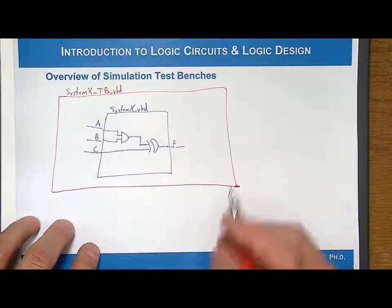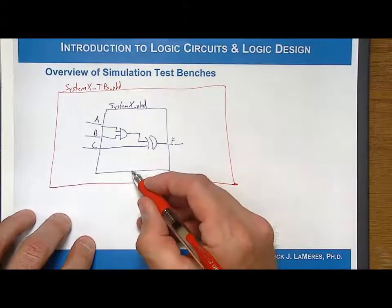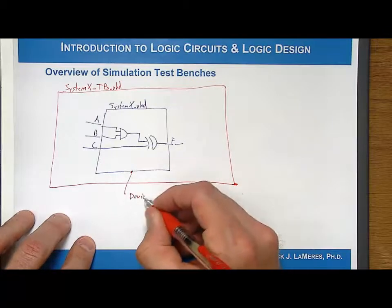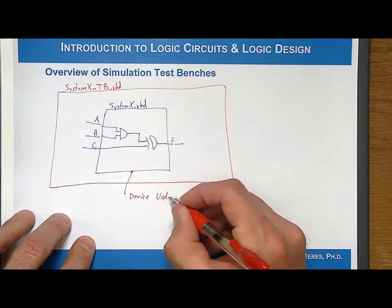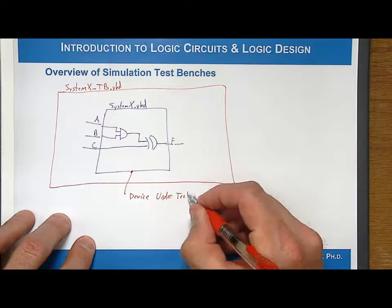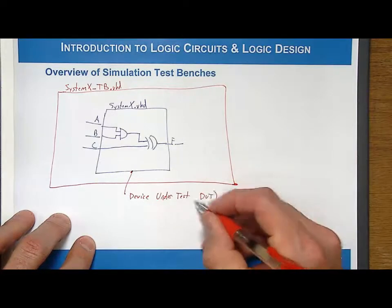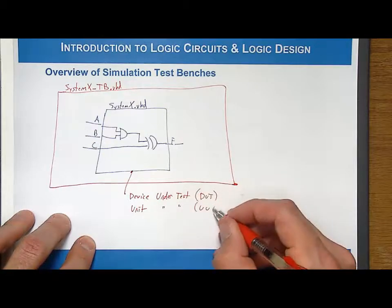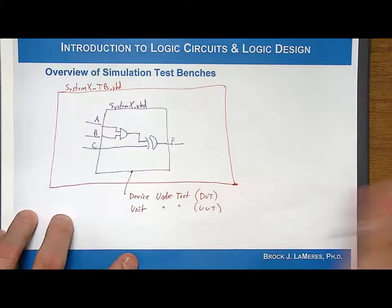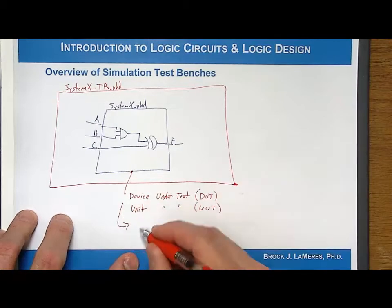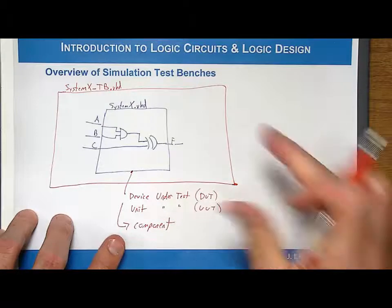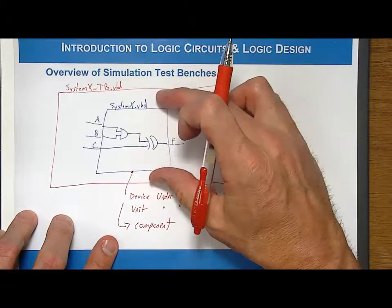Now, what I need to do is I need to take this thing right here. This is my device under test. And sometimes we call this a DUT, the device under test. Also, sometimes people call it the unit under test, so the UUT. You'll see syntax like that. What we're going to do is we are going to declare it as a component within the test bench. So, we declare that as a component, and then we instantiate the DUT.